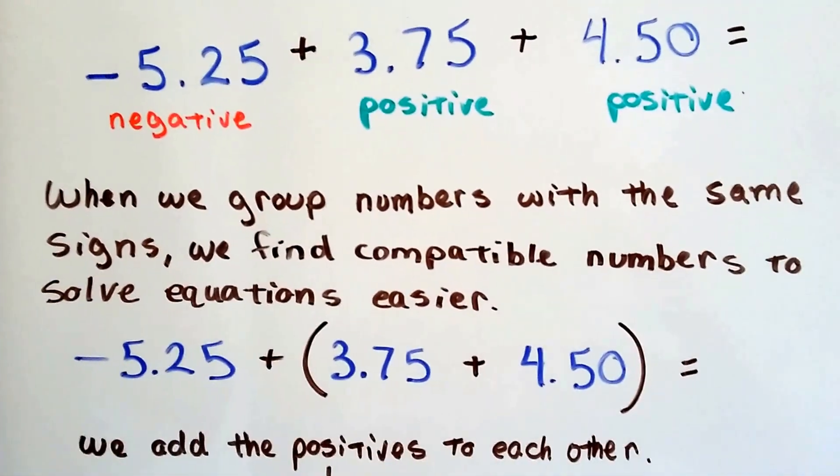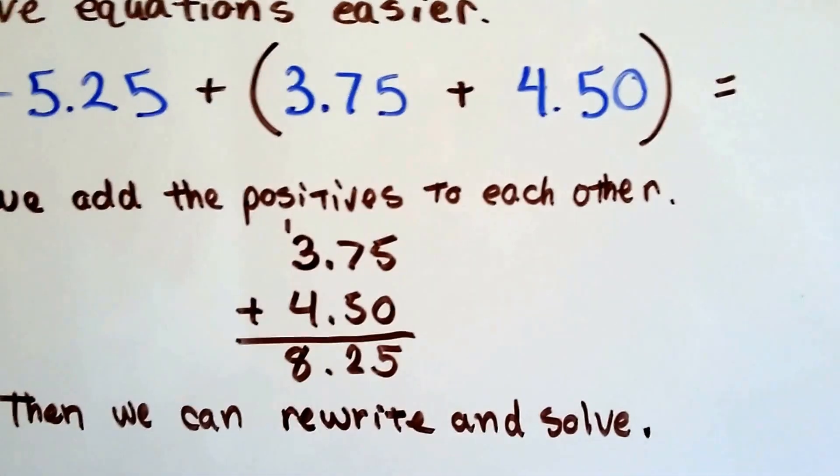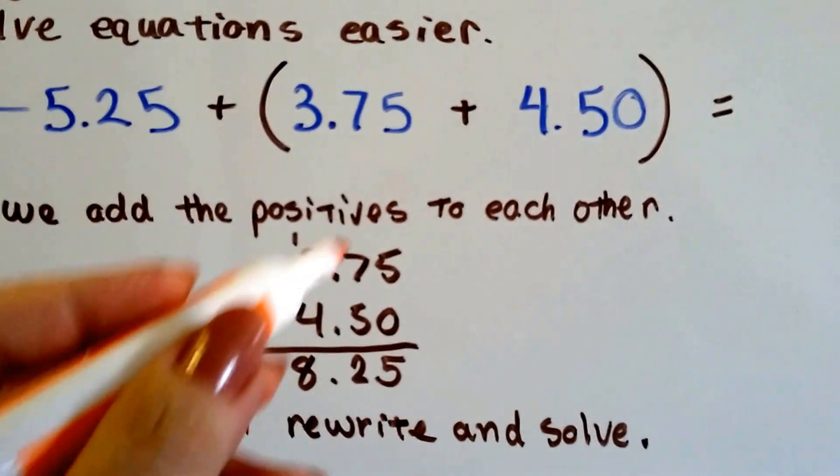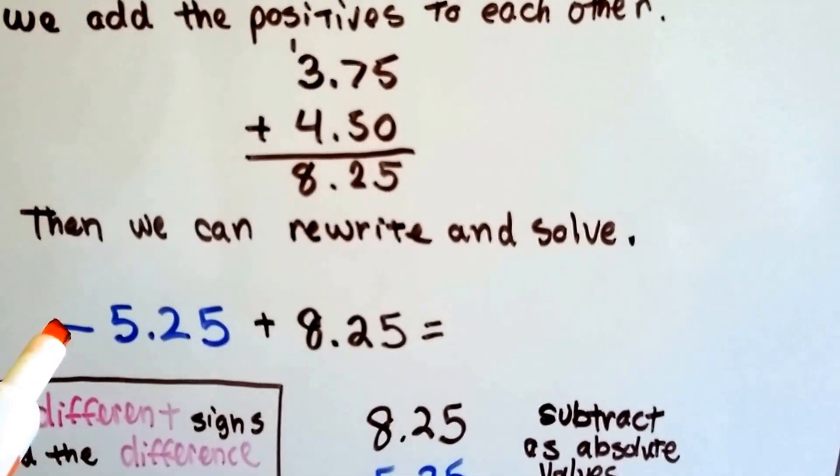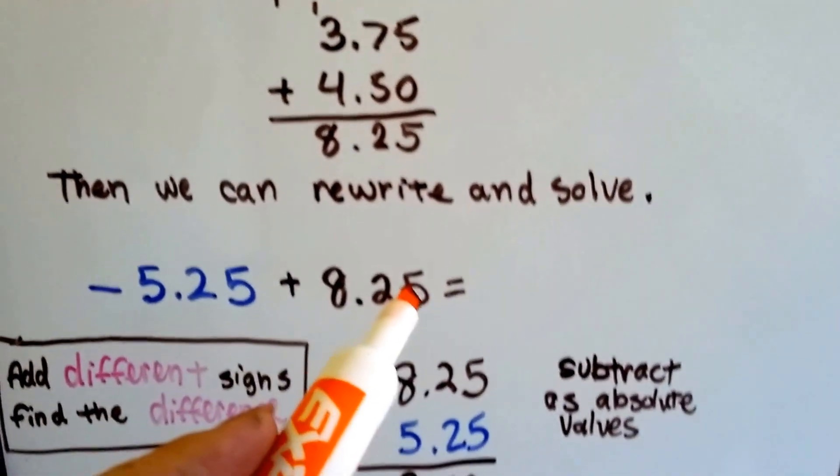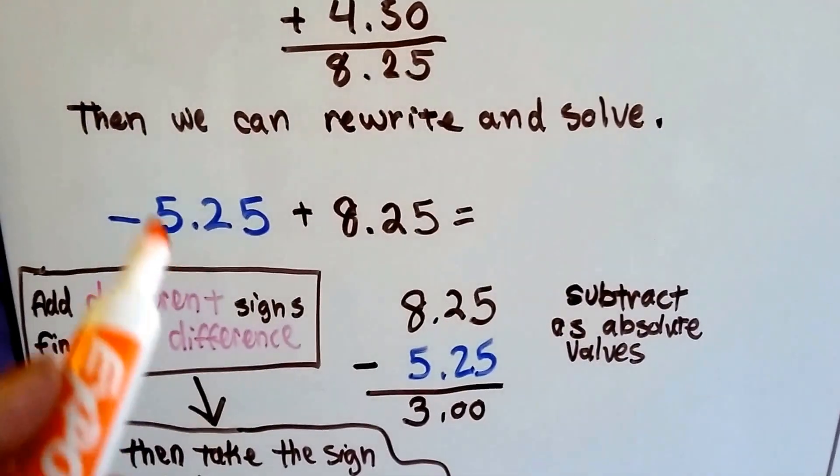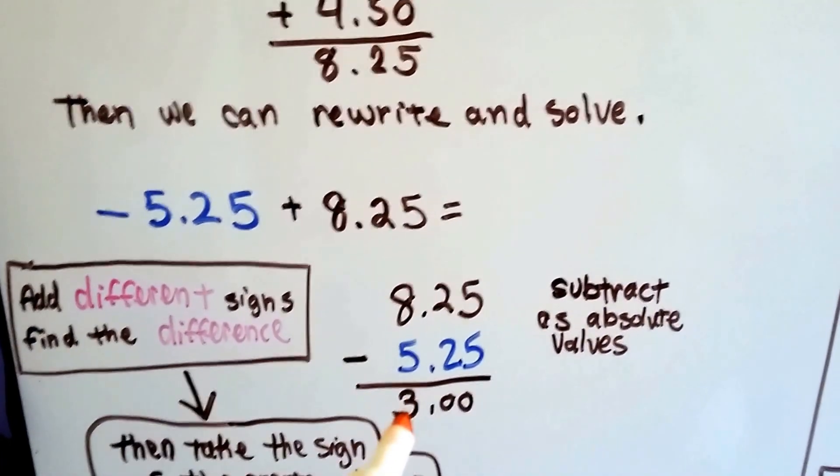So we're going to do the positives together first. 3.75 plus 4.50 is 8.25, and we know we just added positives, so it's positive. So now the equation is negative 5.25 plus a positive 8.25. When we have different signs, we find the difference, don't we? And the difference between these two is a 3.